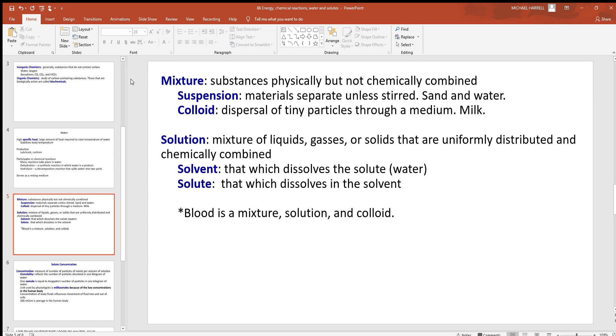Colloids, where you have a dispersal of tiny particles through a medium. Look at something like milk. Lots of things are suspended in between those water molecules and they tend to stay there. A solution is where you have a mixture of liquids, gases, or solids that are uniformly distributed and chemically combined. So these are chemically combined. We didn't have that with a mixture but you do with a solution. And under solutions we'll always be talking about solutes and solvents. The solvent of the human body again will always be water. That's what all the things in the body are dissolved in. So the solutes are what's going into the water. The solvent is the water itself. And blood in our body is a good example of a mixture, solution, and colloid. It's all those things.